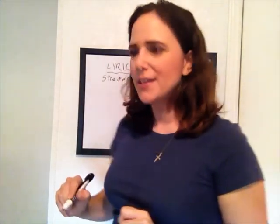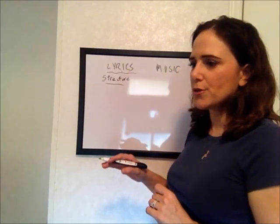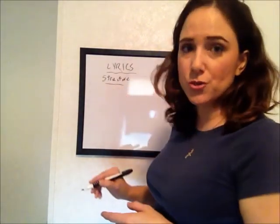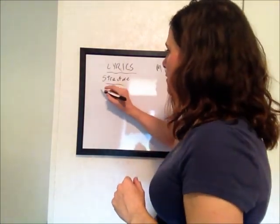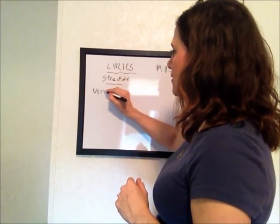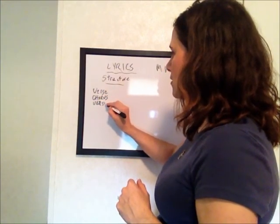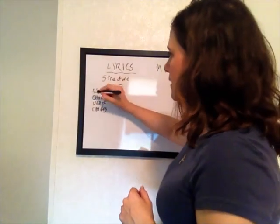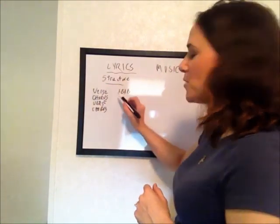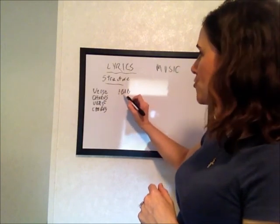I'm warning you now that spelling's not my best forte, so there may be many misspelled words along the way. In structure, there are several different types of structure for writing songs. The most common structures you hear on the radio are verse, chorus, verse, chorus — or what we like to abbreviate as the ABAB structure. A just stands for verse and B stands for chorus, so verse, chorus, verse, chorus is what that means.